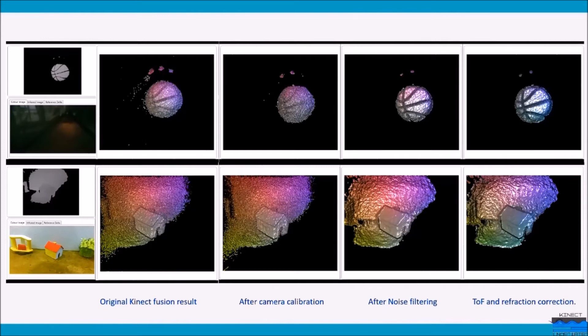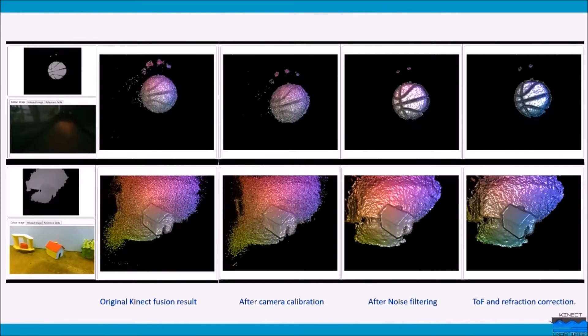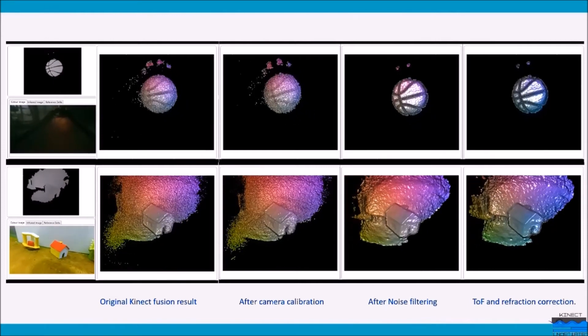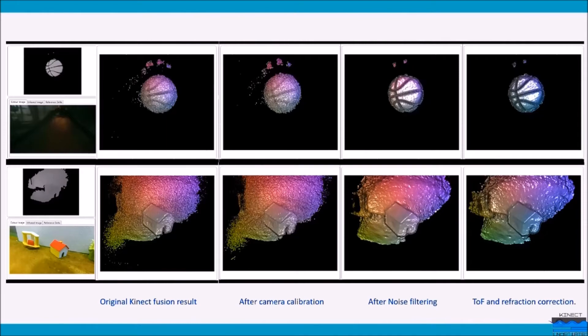Here we can see the results of 3D mesh of the selected objects generated from original Kinect Fusion code and compared to the mesh after applying camera calibration, noise filtering, time-of-flight and refraction correction.